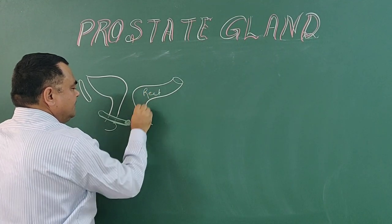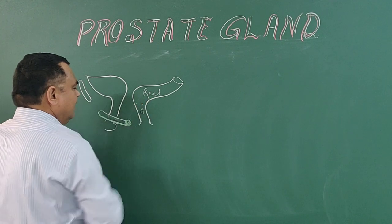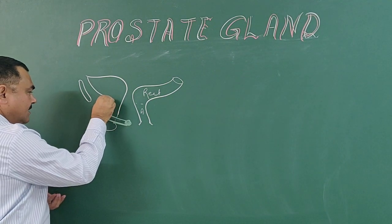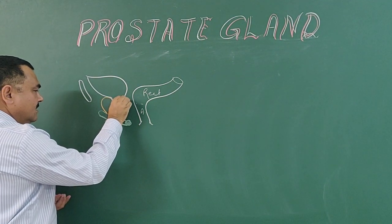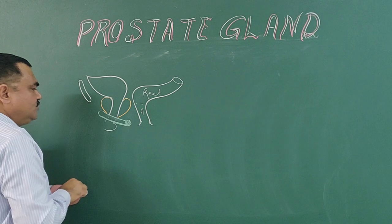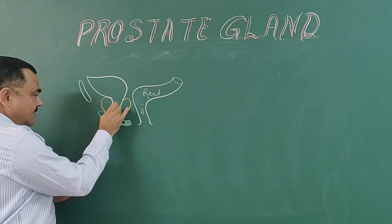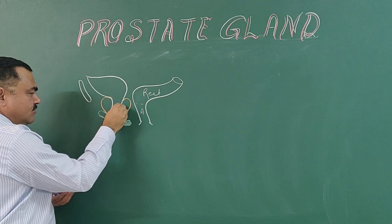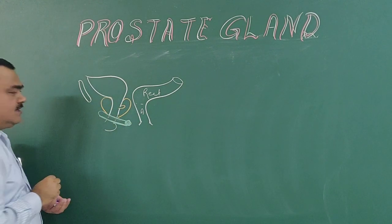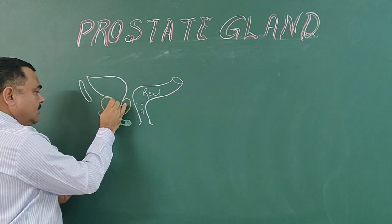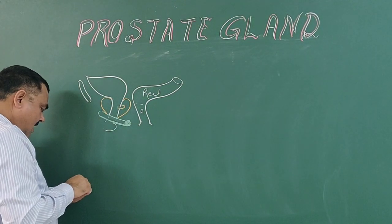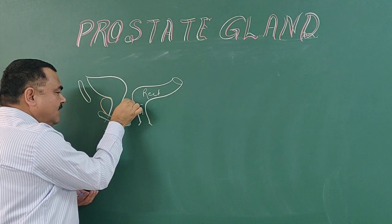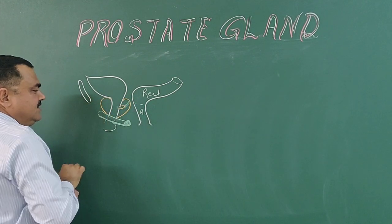This is the rectum. And this is the position of the prostate. Here on the posterior side, in the posterior wall of the prostatic region, here is the prostatic utricle. And here is an ejaculatory duct.